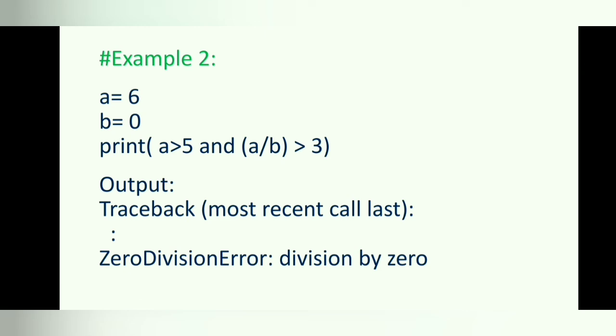In example 2, a=6, b=0 — same expression, but a is changed to 6. Now the print statement a is greater than 5 AND a divided by b is greater than 3 returns a runtime error. Here 6 is greater than 5 is true, so Python evaluates the second part — 6 divided by 0 — which causes a runtime error due to division by zero. The difference: in example 1 the first part was false so Python short-circuited; in example 2 the first part is true so the second part is evaluated, causing the error.